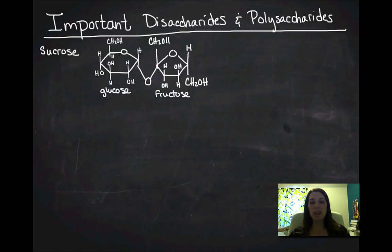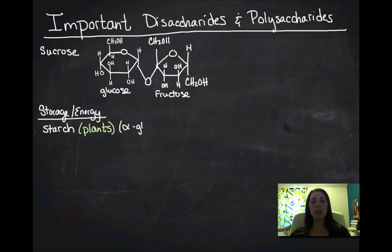Now, most of the disaccharides and polysaccharides that we're going to talk about are going to be used for storage and energy, although some are going to actually be structural. So let's talk the storage and energy polysaccharides first. The first one we've already talked about, it's starch. It's made by plants. There's two types of starch. We're only going to really concern ourselves with this one, which is amylose. And that's just a chain of alpha glucose molecules.